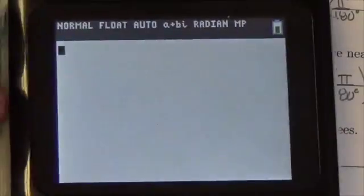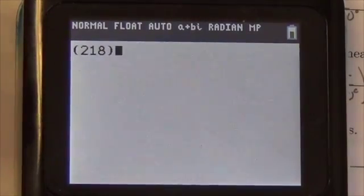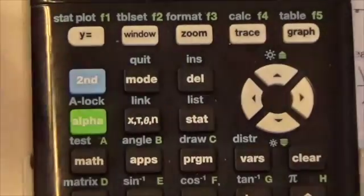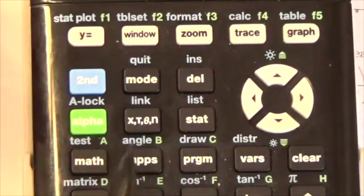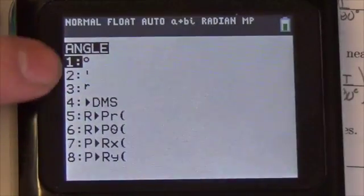And I'm going to take that 218. I'm going to put that in brackets here, 218. And then I'm going to go to my angle menu on my calculator. So I'm going to press 2nd, apps, to get into my angle menu. And that gives me some options here.